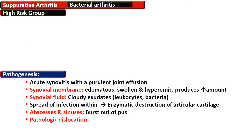In the pathogenesis of septic arthritis, there is acute synovitis with purulent joint effusion. The synovial membrane becomes edematous, swollen, and hyperemic, producing increased synovial fluid that is cloudy and exudate in nature. This fluid contains leukocytes, and bacteria can be isolated both on microscopy and through culture.